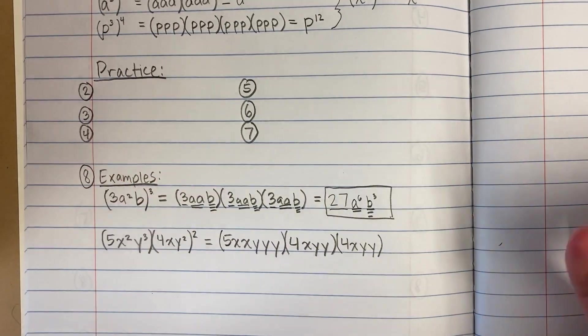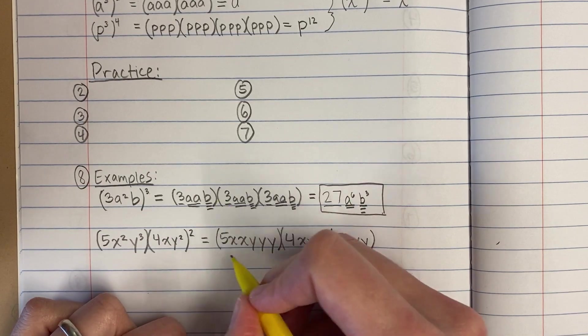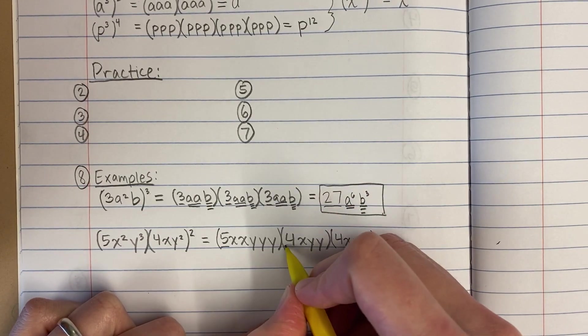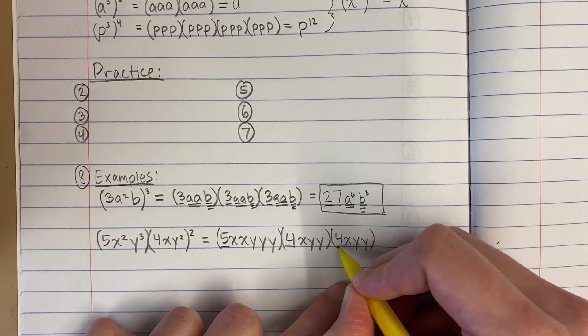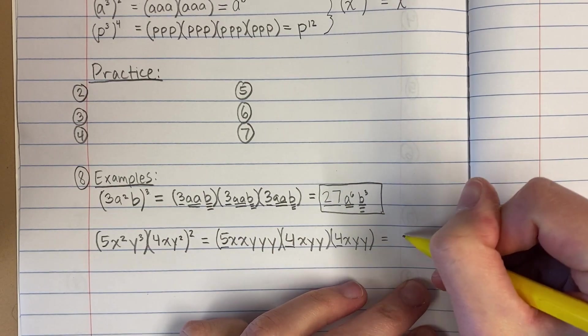Okay, so now I'm ready to multiply through. Same deal as before. I'm going to do 5 times 4. That's 20. Times 4. That's 80.